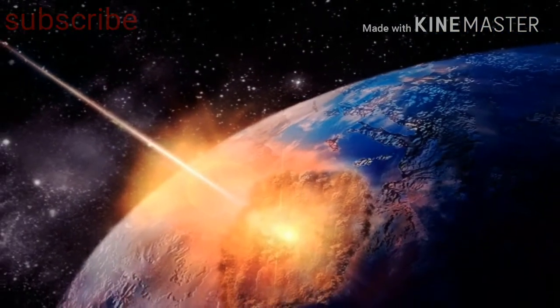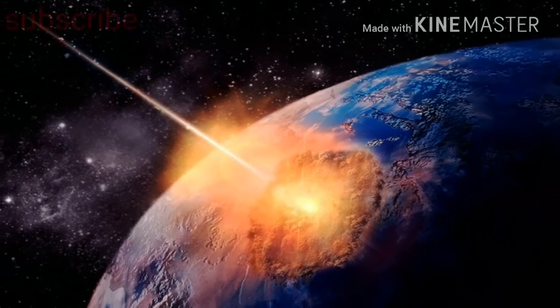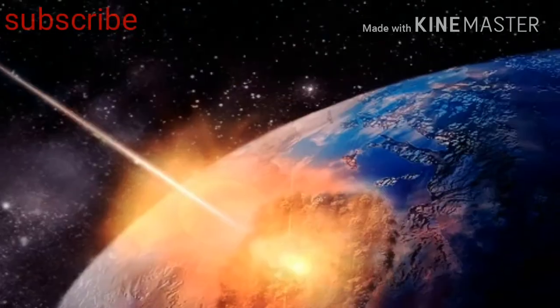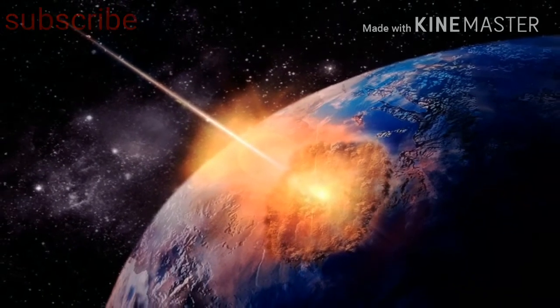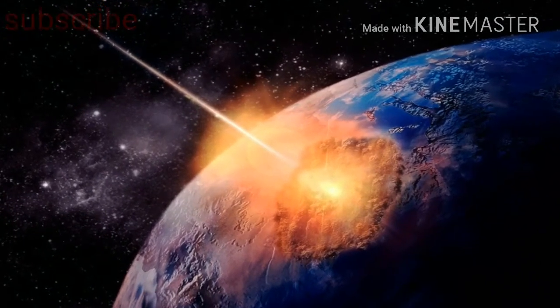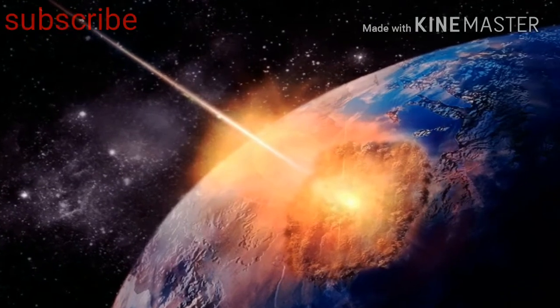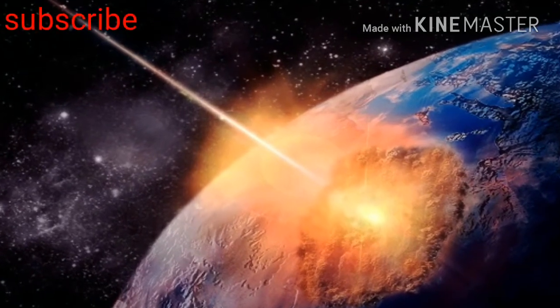The asteroid is named 3,200 Phaethon after the Greek Demi God who, according to legend, nearly set the Earth on fire. It will pass at about 6.4 million miles away from our planet, which is relatively close in space terms but still around 27 times the distance between the Earth and the Moon.